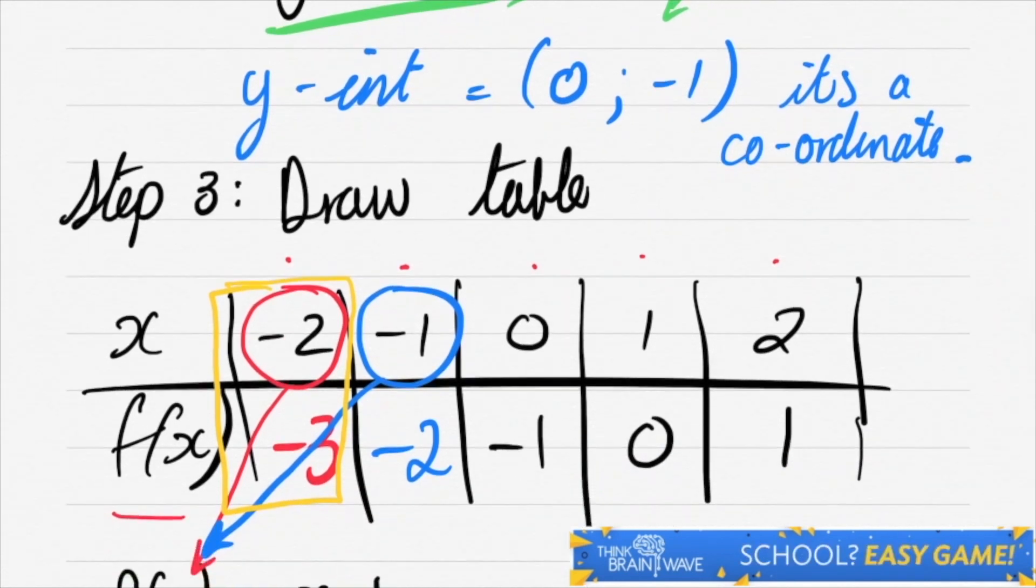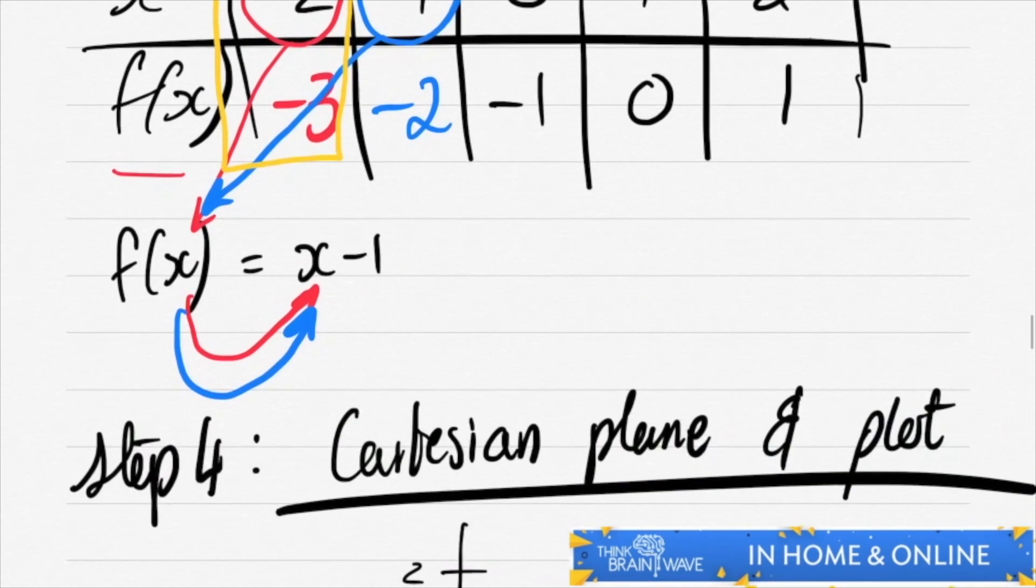So in this case, you've got -2 = -3, -1 = -2, 0 = -1, 1 = 0, and 2 = 1. Alright, now let's draw this with our step 4 on a Cartesian plane.